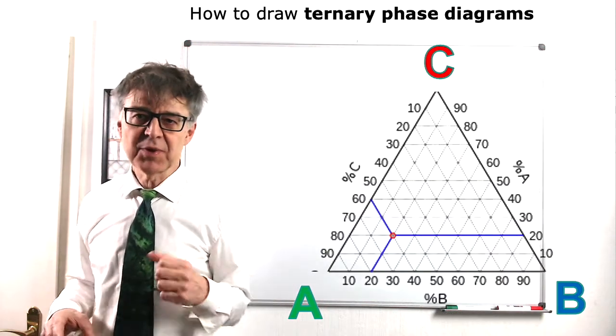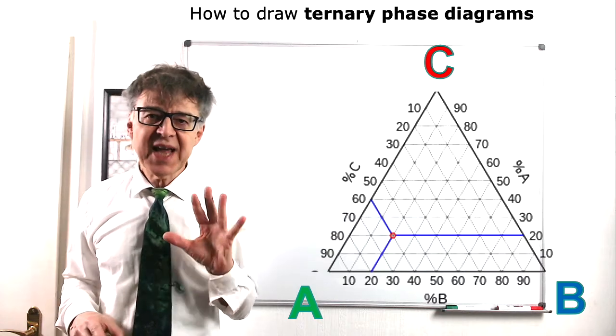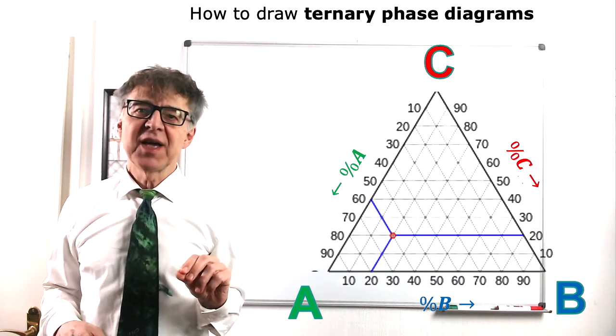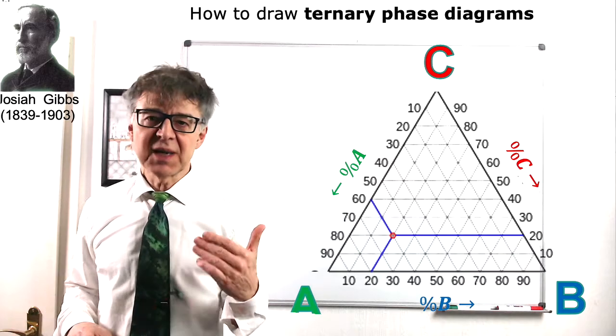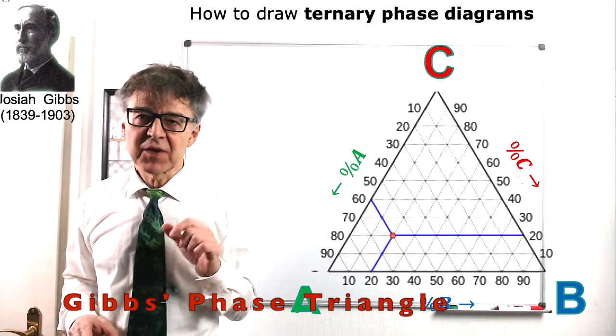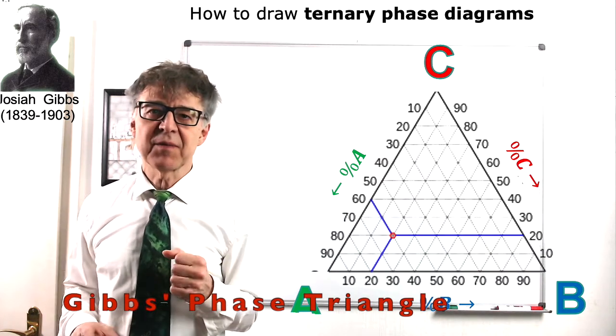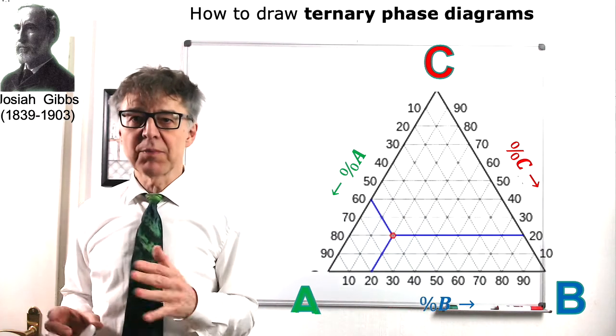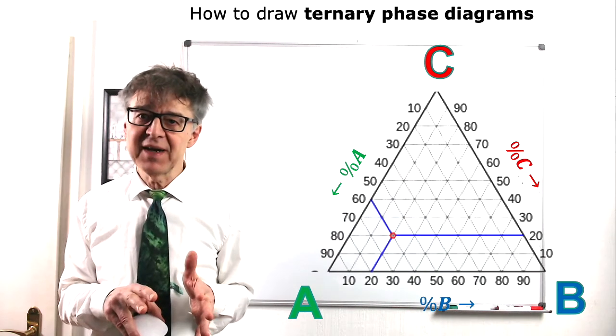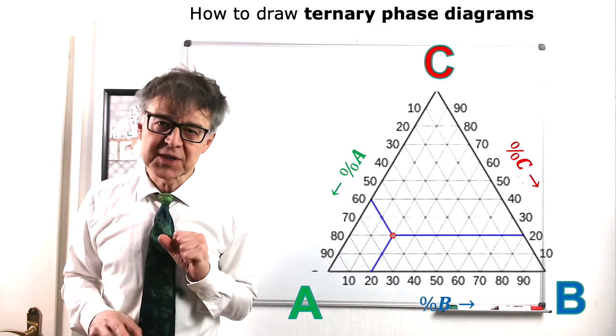If we want to describe a three-component system, we can depict any possible mixture in an equilateral triangle, the so-called Gibbs phase triangle. The corners of the triangle represent the pure components, the edges of the triangle represent two-component mixtures, and the area inside of the triangle relates to three-component mixtures.